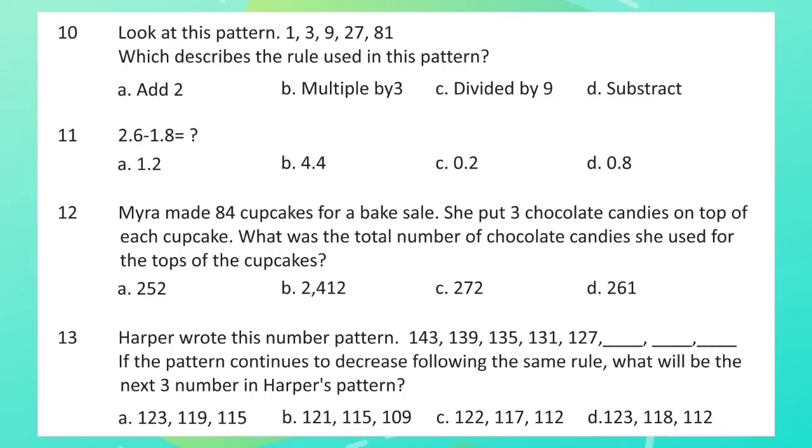Question 13: Harper wrote this number pattern: 143, 139, 135, 131, 127. If the pattern continues to decrease following the same rule, what will be the next three numbers in Harper's pattern?